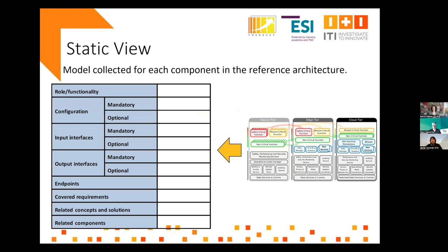This is an example of the model template collected for each component in the reference architecture. We define the role and functionality for each component, we define the configuration — both the mandatory and optional parts — the input and output interfaces, the endpoints, the input required, the requirements and concepts related to or covered by that component, and the relationship with other components.